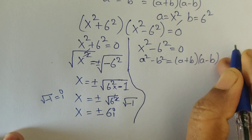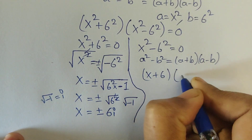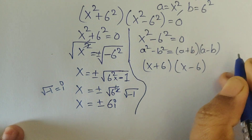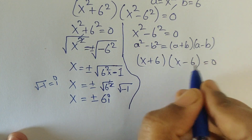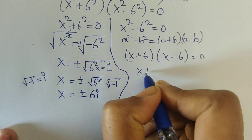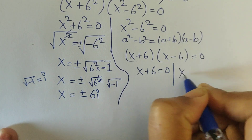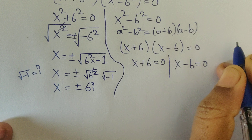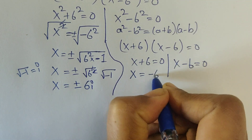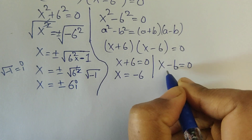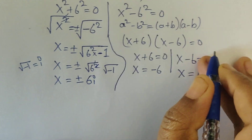From the second factor, x squared minus 6 squared equals 0. We can again use the difference of squares formula to write x plus 6 times x minus 6 equals 0. Splitting into two parts: x plus 6 equals 0 gives x equals minus 6, and x minus 6 equals 0 gives x equals 6.